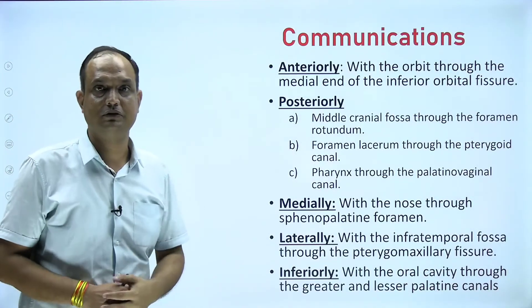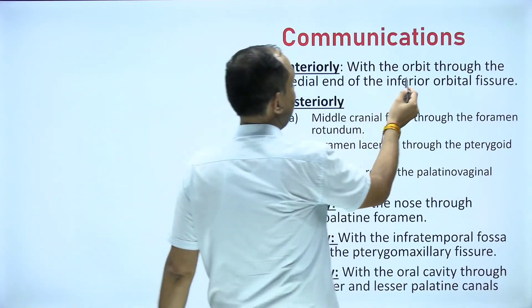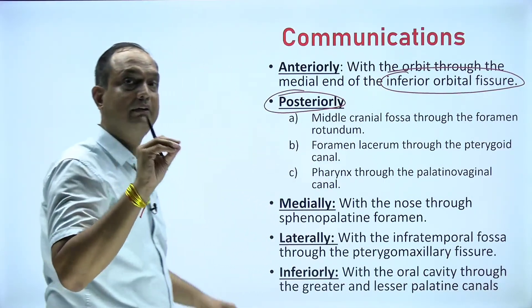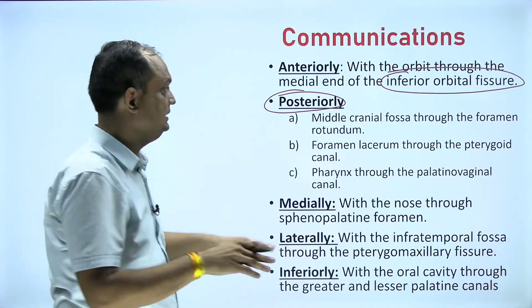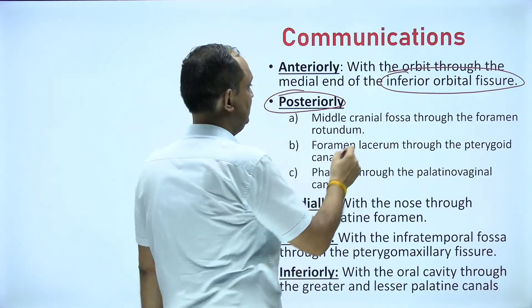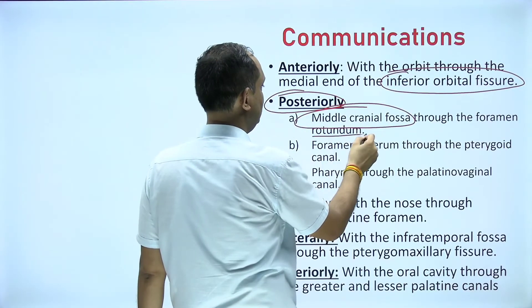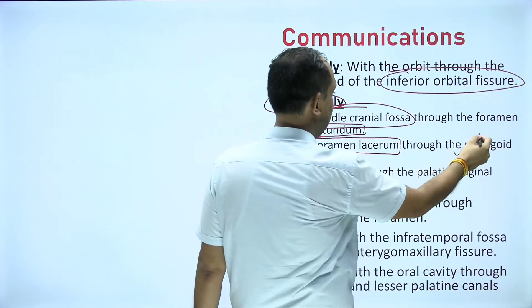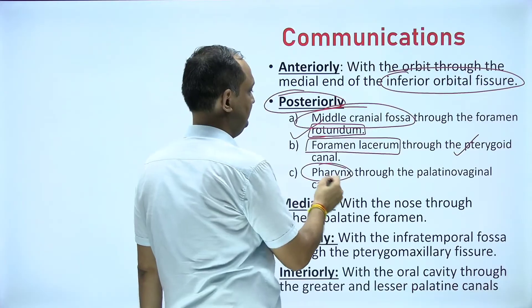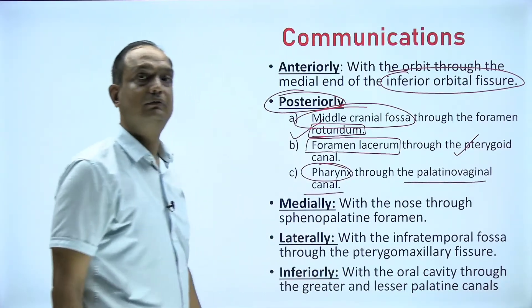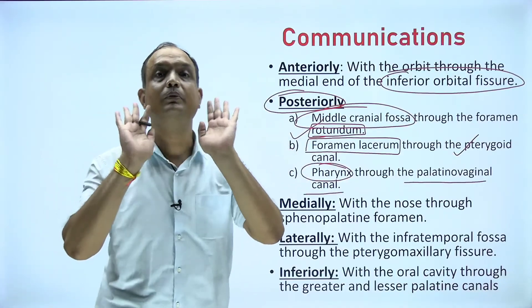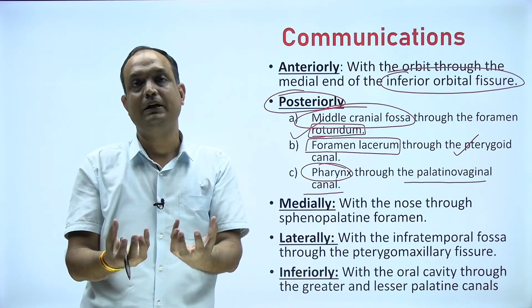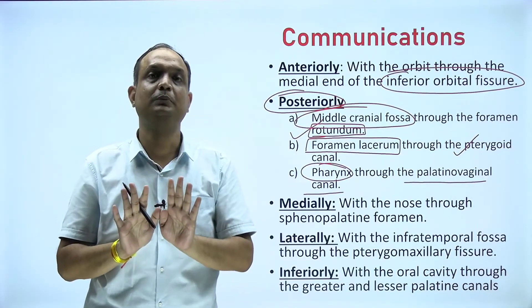Now the communications: anteriorly it communicates with the inferior orbital fissure. Posteriorly, openings through the sphenoid bone connect it with the middle cranial cavity via the foramen rotundum — a very important opening. It also has continuity with the pterygoid canal via the foramen lacerum, and with the pharynx through an opening known as the palatovaginal canal. These three openings all pass through the sphenoid bone, which forms the posterior wall of the pterygopalatine fossa.